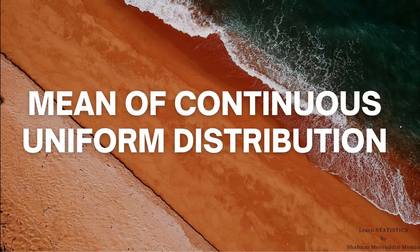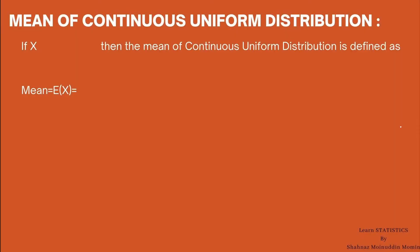Let us start with the mean of continuous uniform distribution. If x follows uniform distribution over the interval a to b, then the mean is defined as the expected value of x, which is given by the integration from minus infinity to plus infinity of x into f(x) dx.